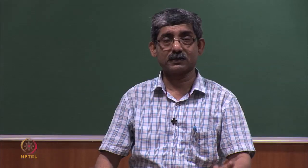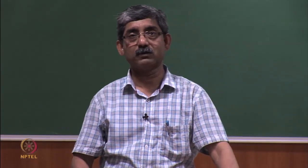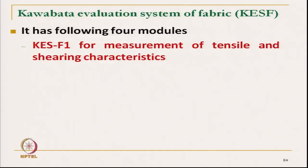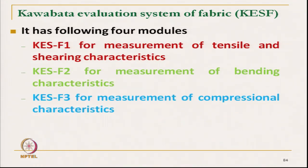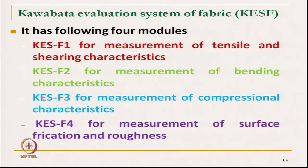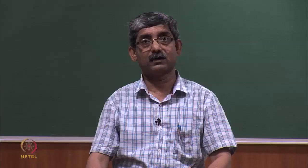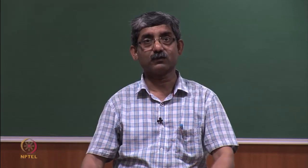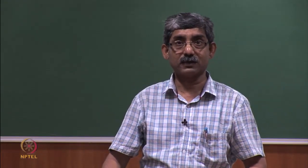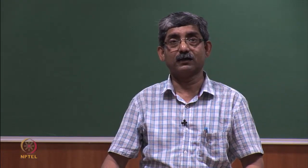The Kawabata Evaluation System for fabrics has four different modules. KESF-1 measures tensile and shear related characteristics at a low stress level. KESF-2 measures bending related characteristics. KESF-3 measures compressional characteristics. KESF-4 measures surface friction and surface roughness. We will discuss all these modules one by one, their principles in detail, and their test parameters.